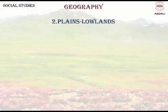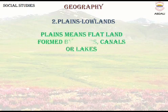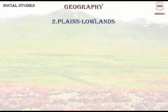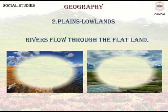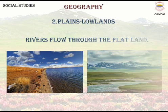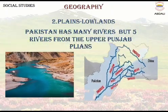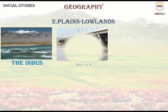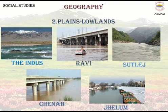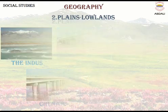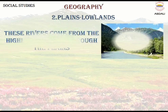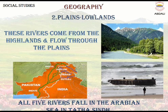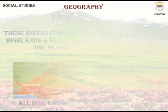Plains/Lowlands. Plains means flatland formed by rivers, canals, or lakes. Rivers flow through the flatland. Pakistan has many rivers, but five rivers form the upper Punjab plain: the Indus, Ravi, Sutlej, Chenab, and Jhelum. These rivers come from the highlands and flow through the plains. All five rivers fall into the Arabian Sea in Tatta, Sindh.